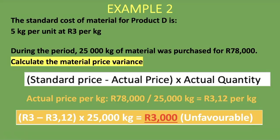Remember the note: if your actual price is greater than your standard price, the material price variance is unfavorable — because we paid more than we expected. We paid 3 rand 12 cents per kg but expected to pay only 3 rand per kg. I hope this has made sense and you now understand how the material price variance works. If you gained value from this lesson, please subscribe, like, and share. Till next time, cheers.